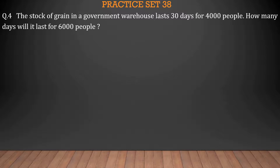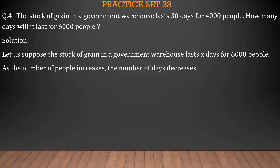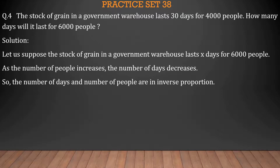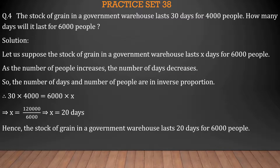Fourth sum: The stock of grain in a government warehouse lasts 30 days for 4000 people. How many days will it last for 6000 people? Let the stock last X days for 6000 people. As the number of people increases, the number of days decreases, so they are in inverse proportion. 30 × 4000 = 6000 × X. So X = 1,20,000 ÷ 6000 = 20 days. Hence, the stock of grain lasts 20 days for 6000 people.